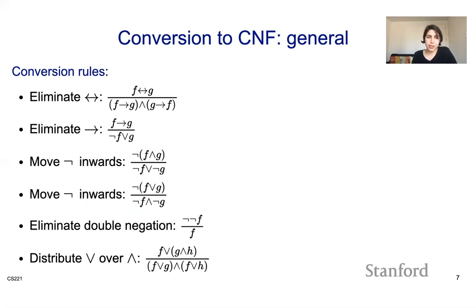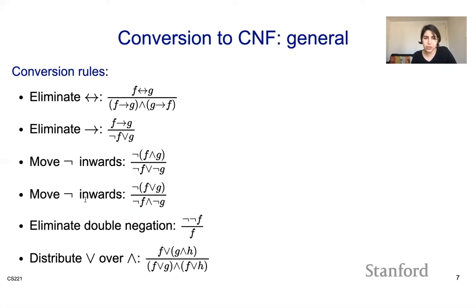The general recipe for converting to CNF is: first, replace bi-directional implications with ands and ors; replace implications with negation-or form; move negations inside using De Morgan's law; remove double negations; and finally distribute OR over AND. You'll end up with a conjunctive normal form. That's the general recipe for converting any propositional logic formula to CNF.